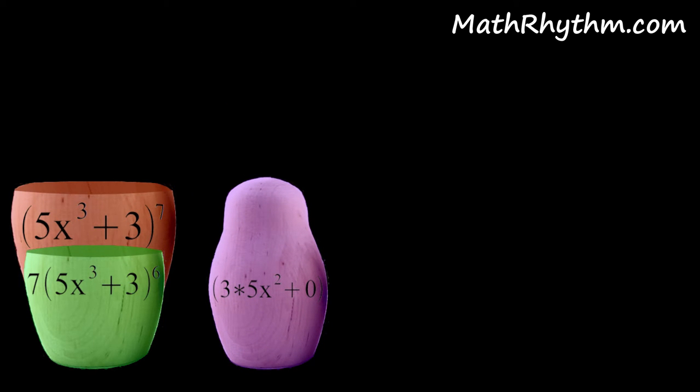So we bring that 3 down in front of the 5, reducing it to a power of 2, making that 15x squared, and as always the derivative of a constant, that 3, just becomes a 0. So this term is simply 15x squared.